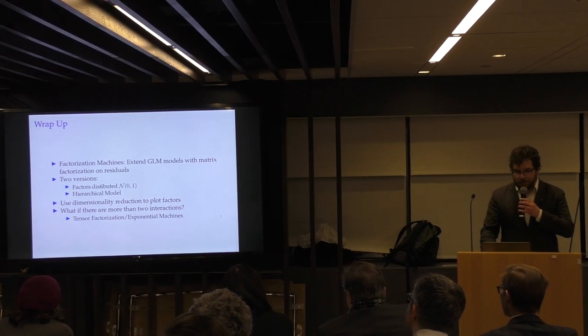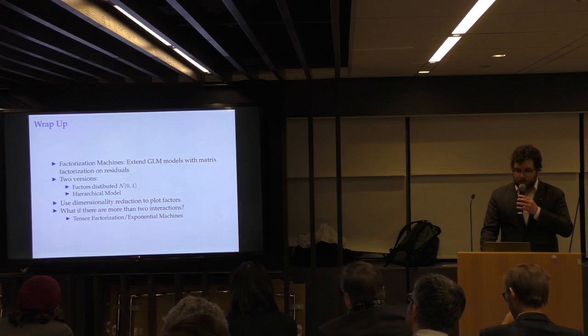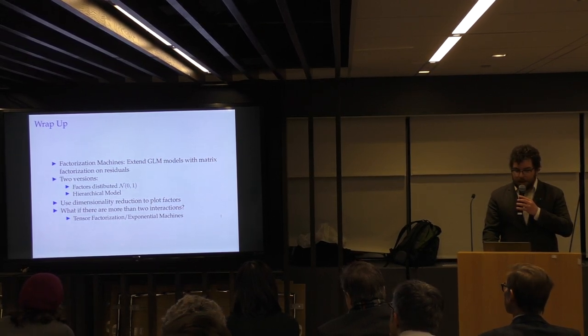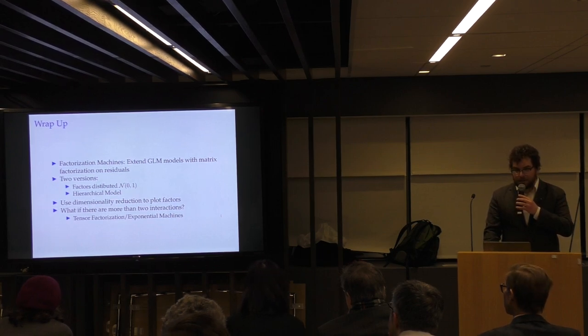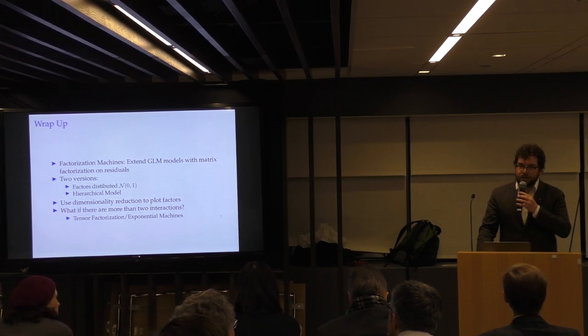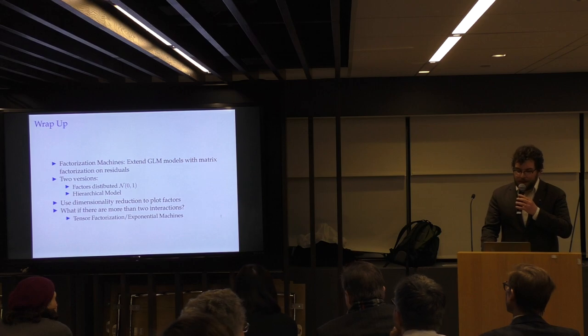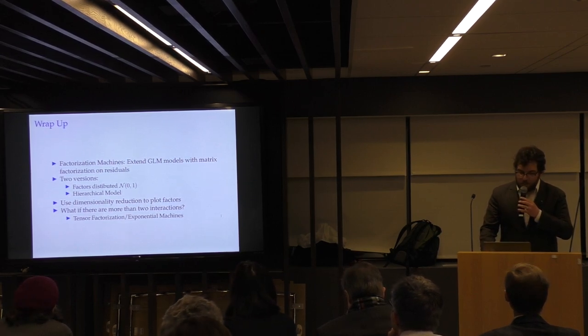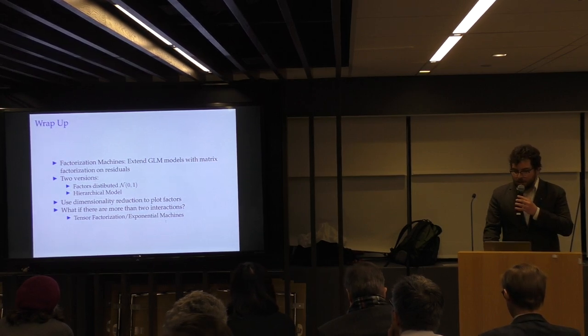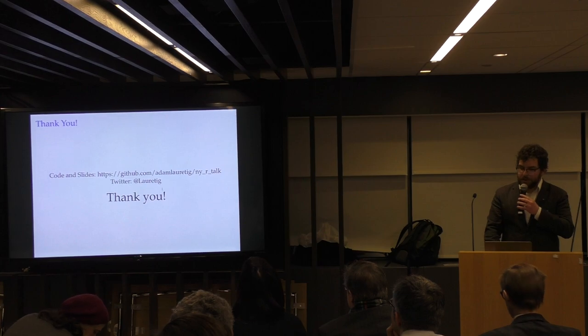So, I wanted to wrap this up. You know, I've talked about factorization machines where you extend your generalized linear models with a matrix factorization on your residuals. And I've talked through two versions, one with factors distributed normally, standard normally, and the second where we've used a hierarchical model. And I've shown how to use dimensionality reduction to plot your factors. Everything I've shown so far here, there's only been two interaction terms. If you want to extend beyond that, you have to start to look at tensor factorization. And I wish you the best of luck with that. The math gets scary. But one implementation of this I've seen are exponential machines, which are in TensorFlow and Python. So, I wanted to thank everyone for coming. The code and slides are available here. And you can find me on Twitter, at my last name.